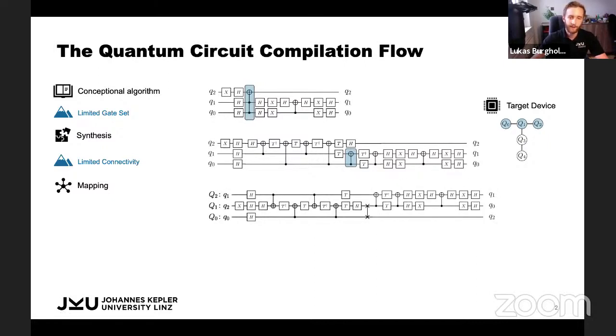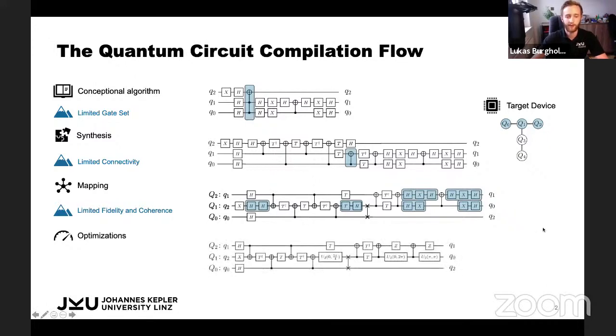So this circuit right now is executable on the device, but today's devices have very limited fidelity and coherence time. So it's in our best interest to keep the circuits as short as possible. And that's why we employ optimizations. In this case, we can identify groups of gates where consecutive single qubit gates are applied on the same qubit, and we can fuse those together to obtain our actual realization, which we want to execute on the device.